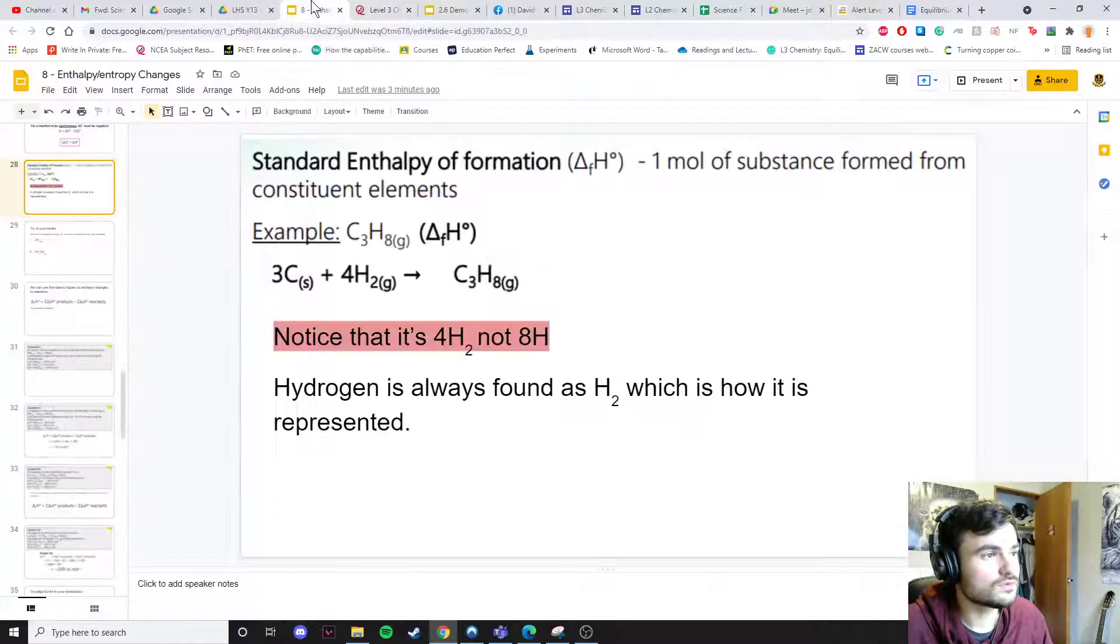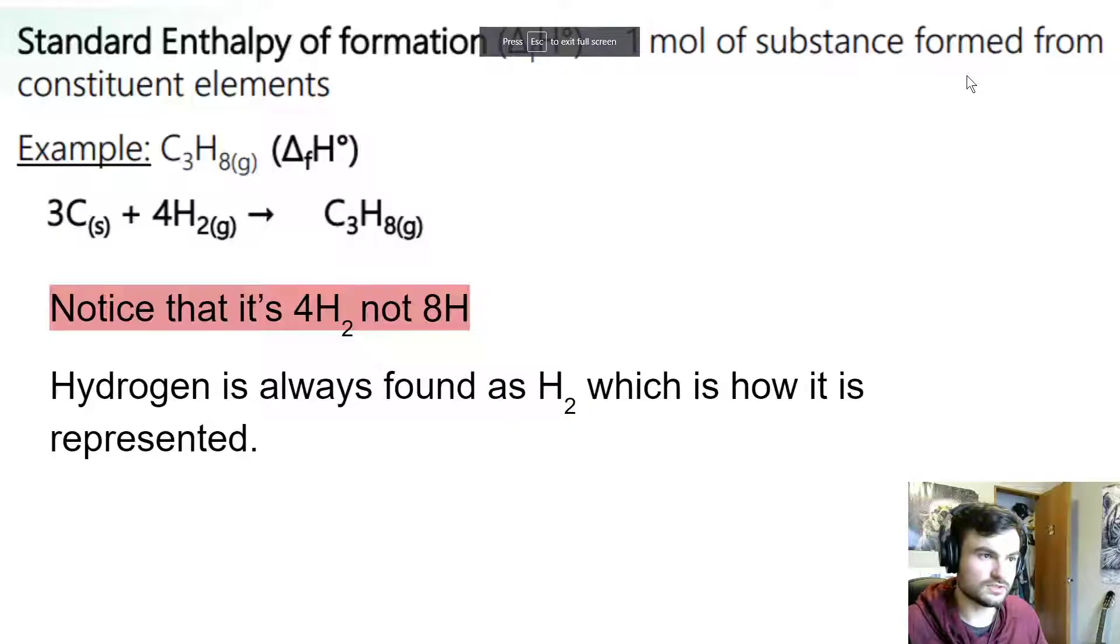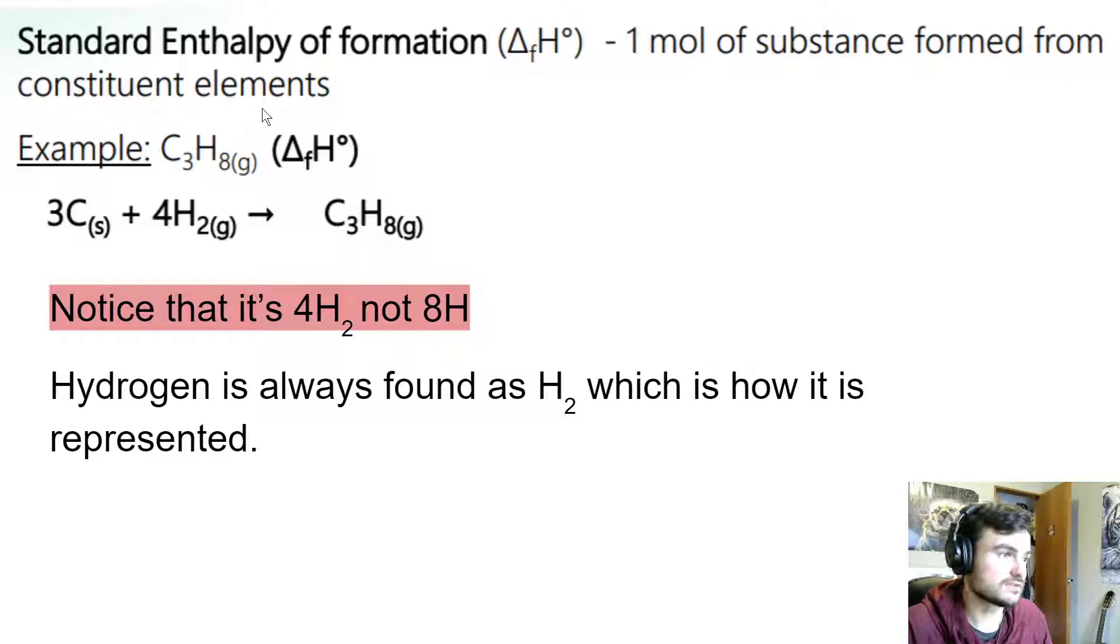The next thing we're going to move on to is something called the standard enthalpy of formation. This is given by ΔHf. This F means formation. What this means is one mole of a substance formed from its constituent elements. A bit confusing, but we're going to show you an example and it's going to make perfect sense.